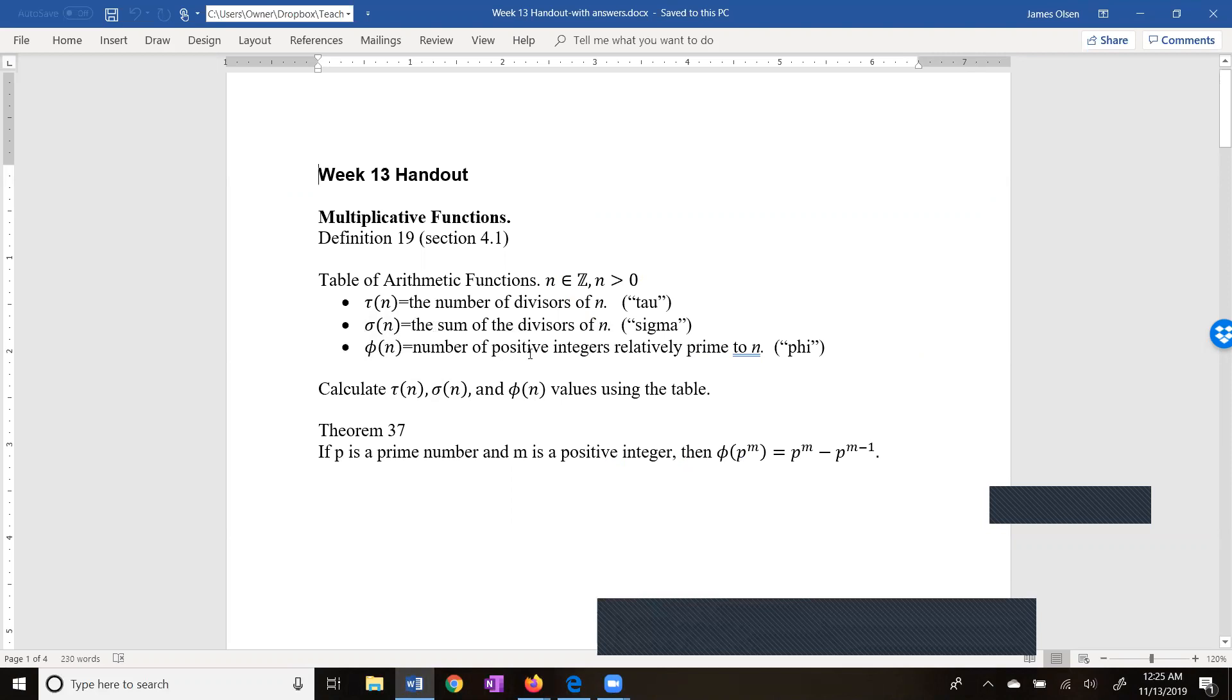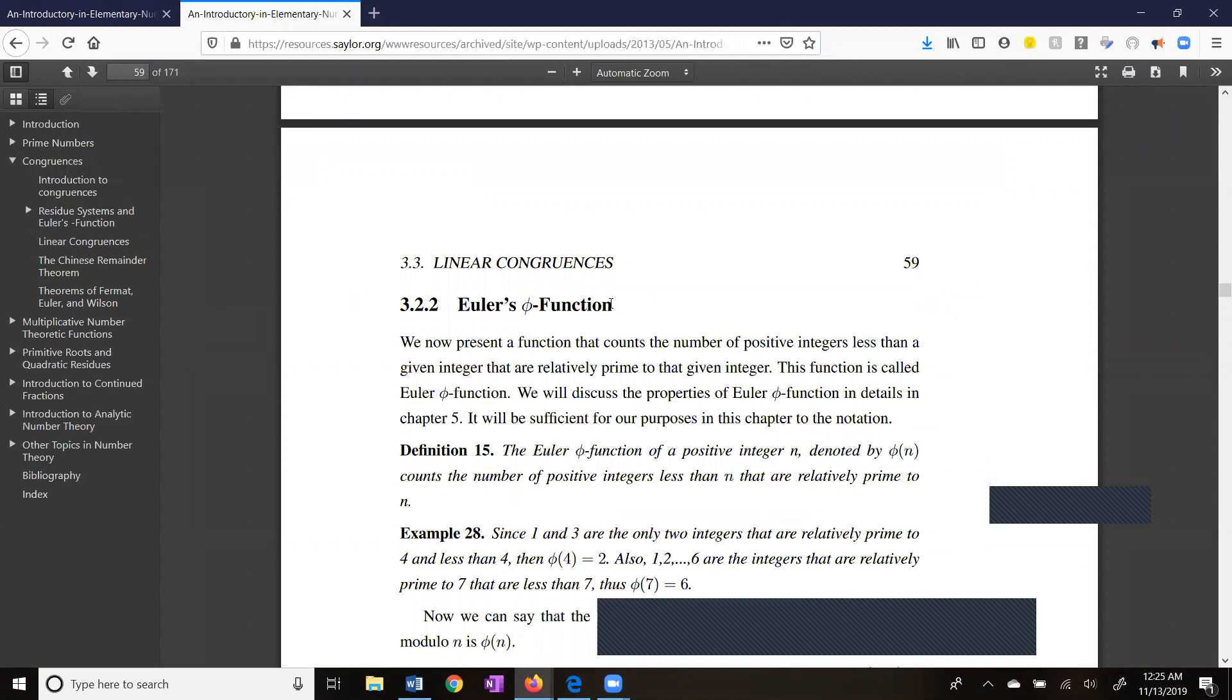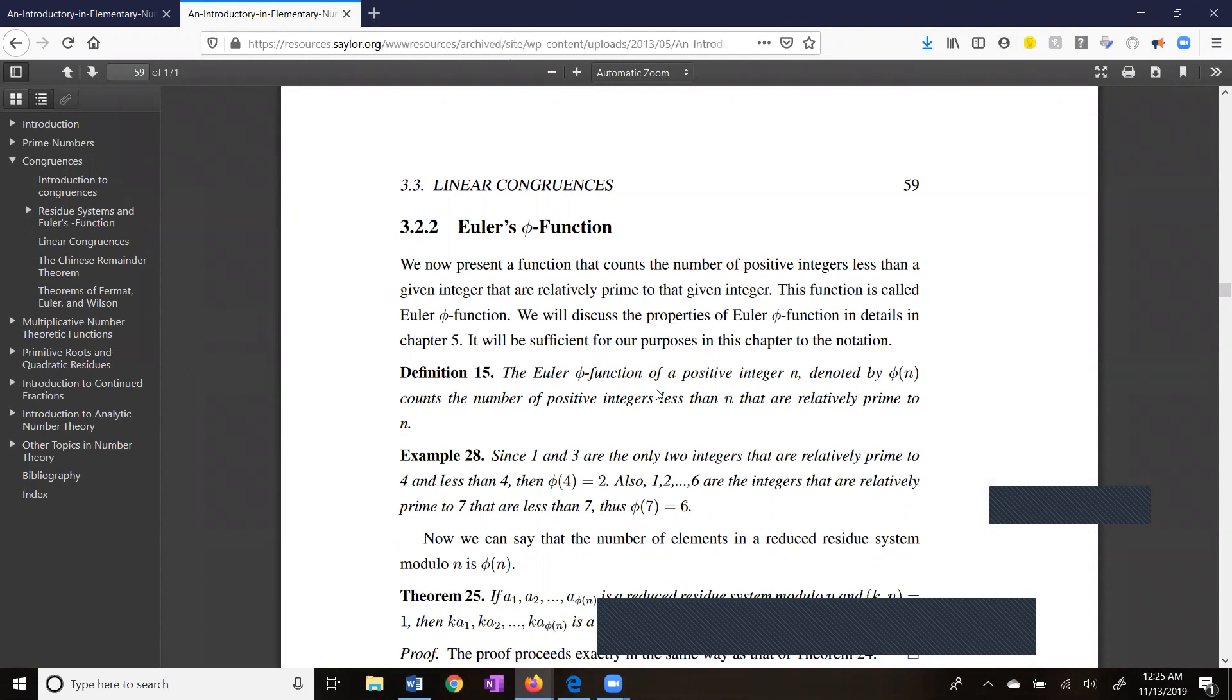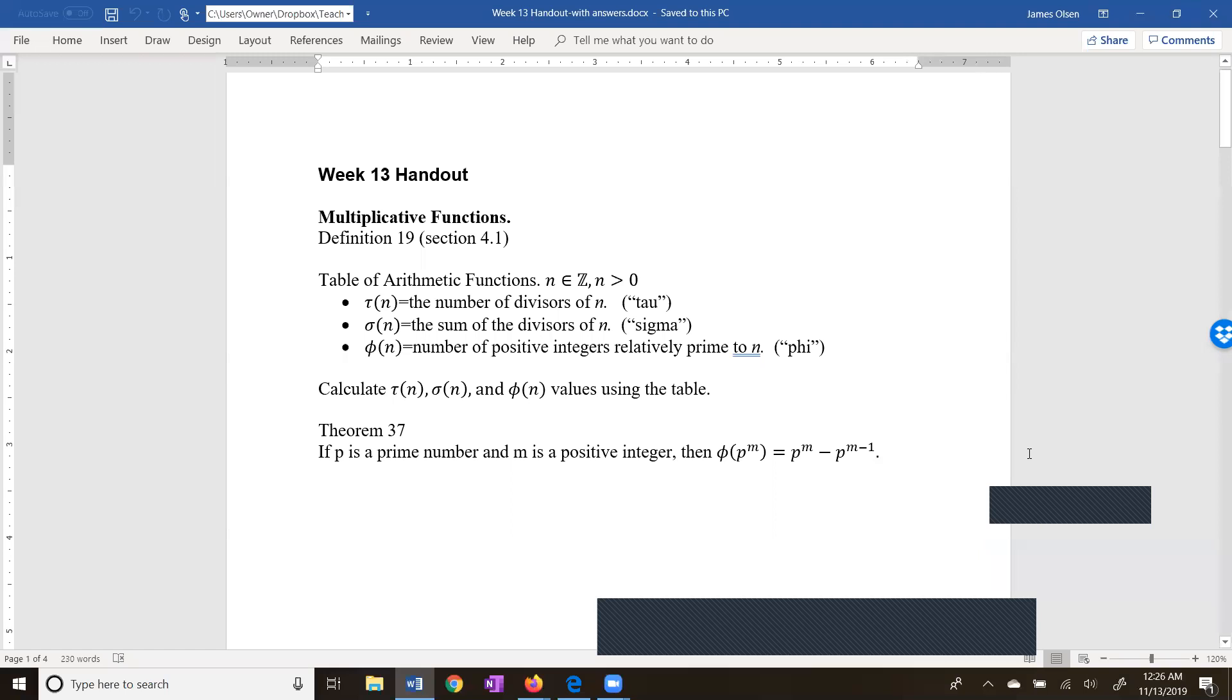This was defined here, the Euler phi function, back on page 59. The Euler phi function of a positive integer n, denoted phi of n, counts the number of positive integers less than n that are relatively prime to n. And our third arithmetic function is tau of n, which is just the number of divisors of n, which we have also calculated. I believe we were counting divisors on exam one. We may not have called it tau of n for exam one.